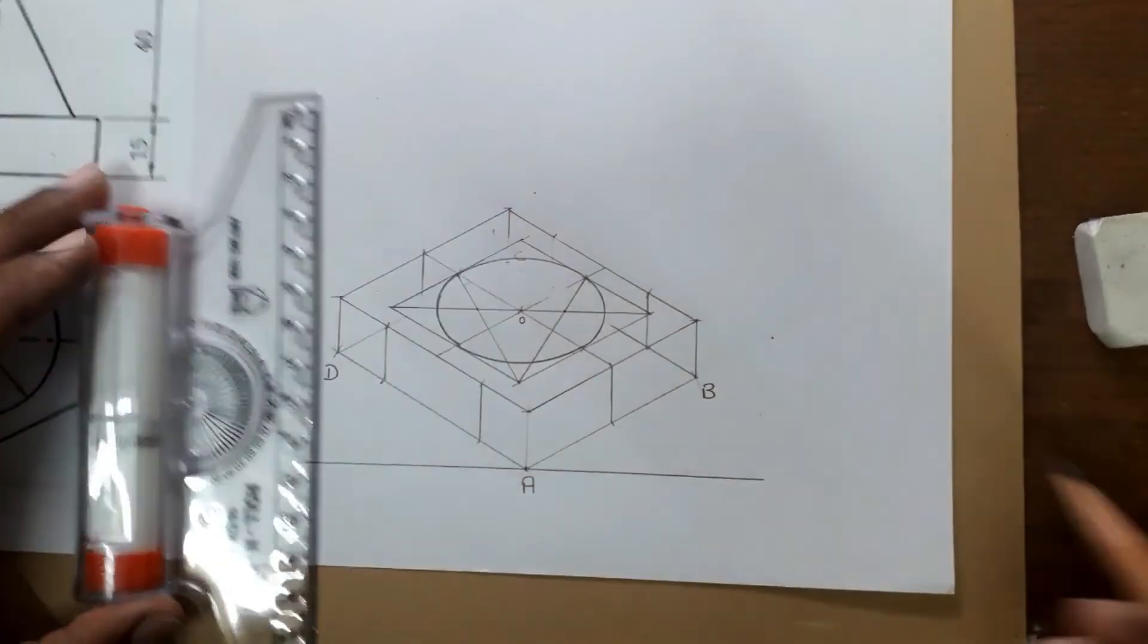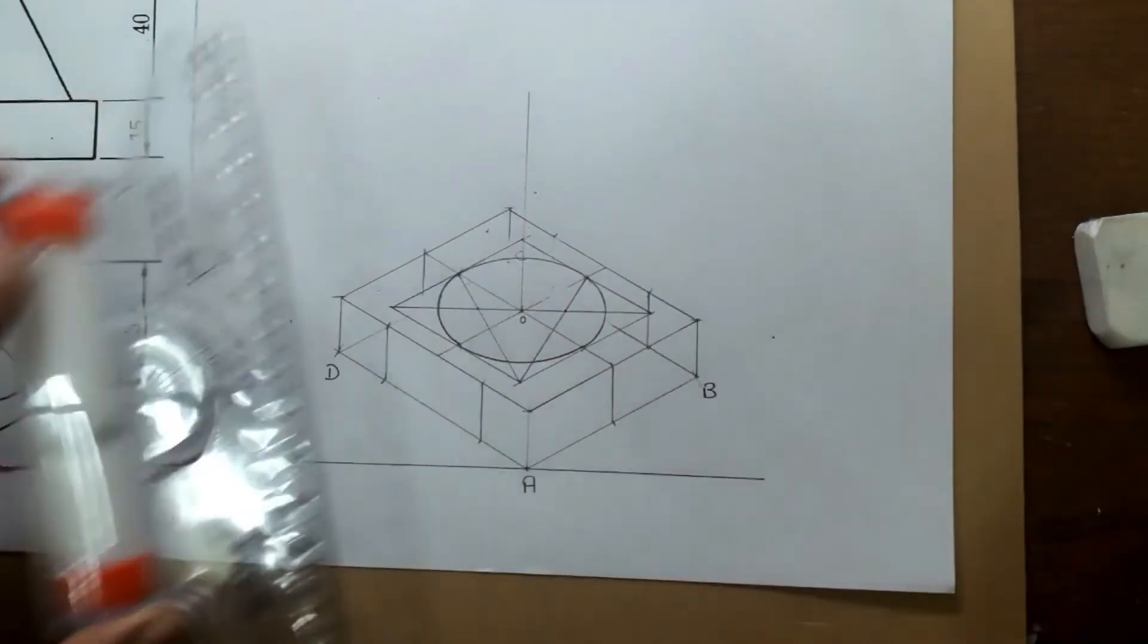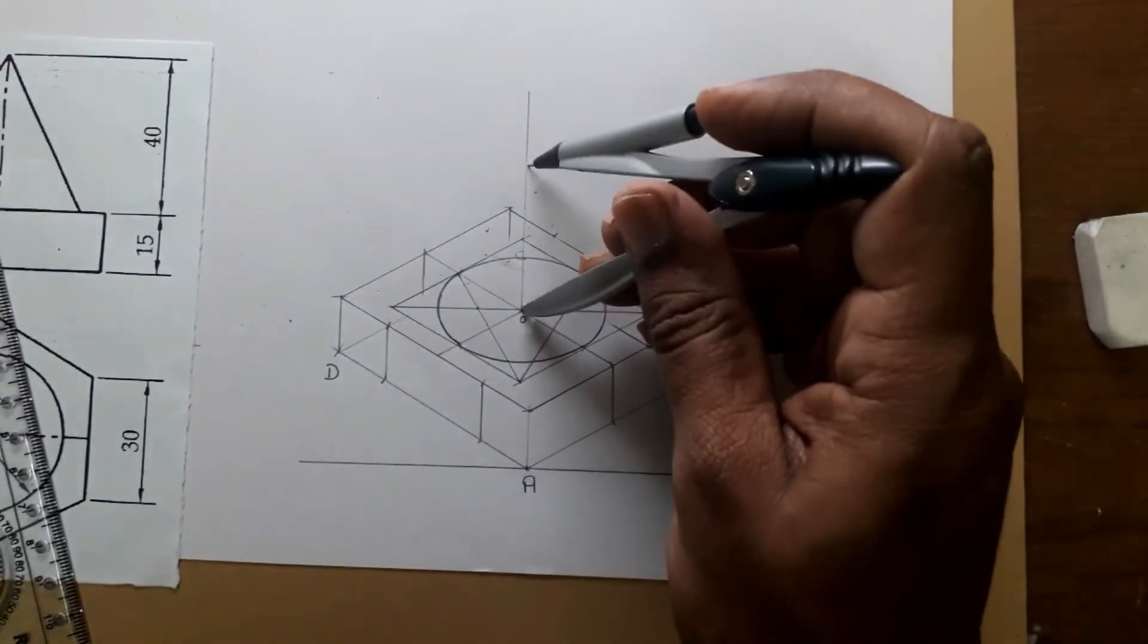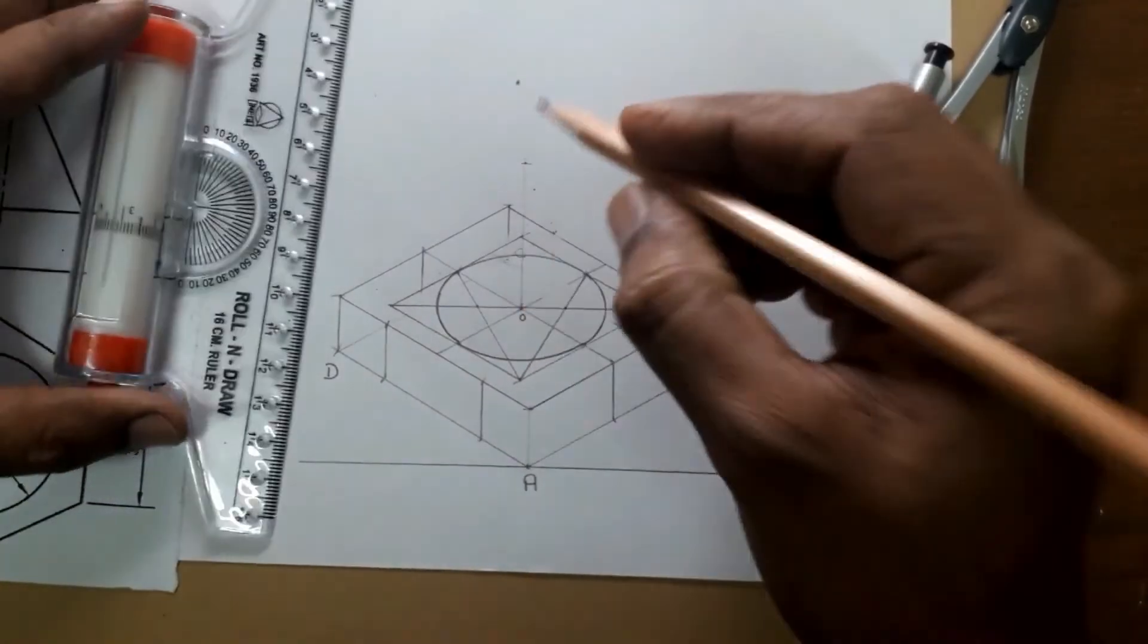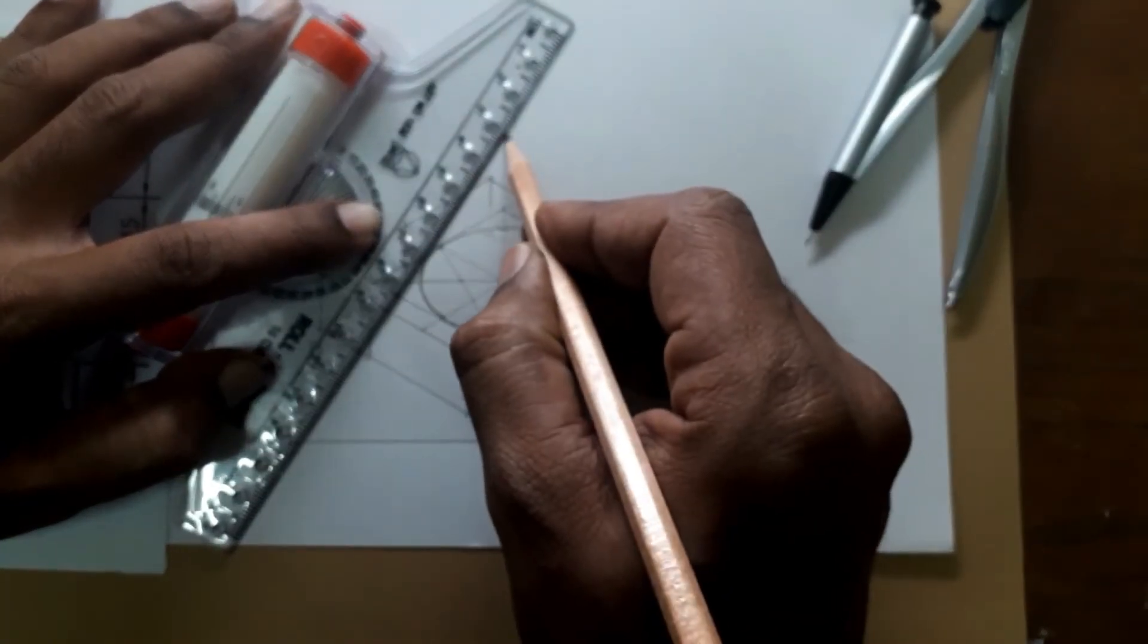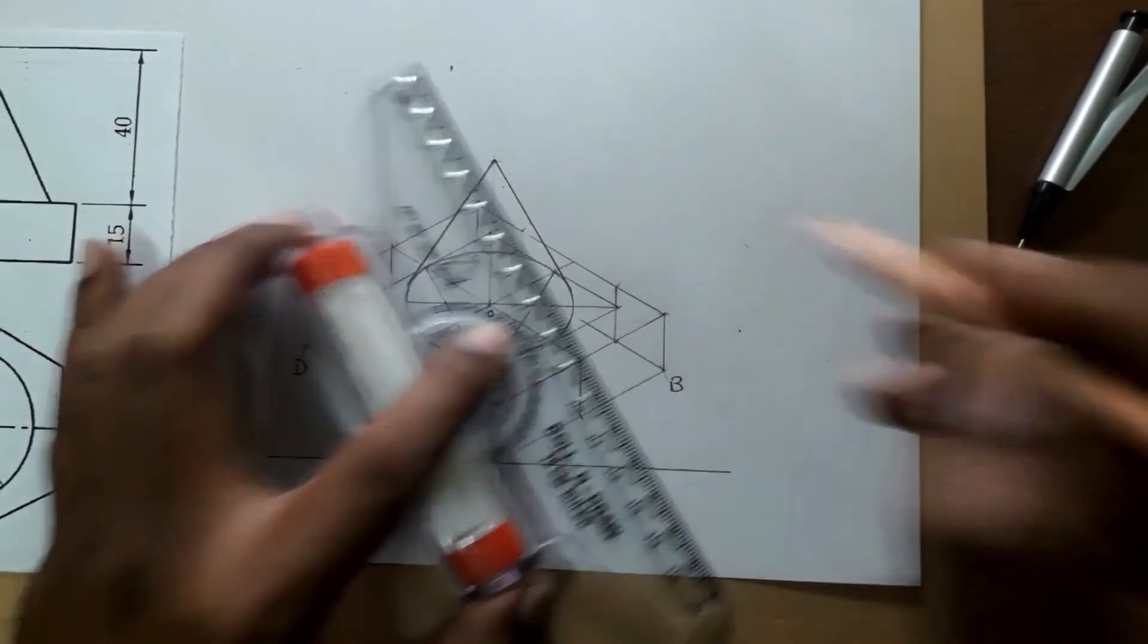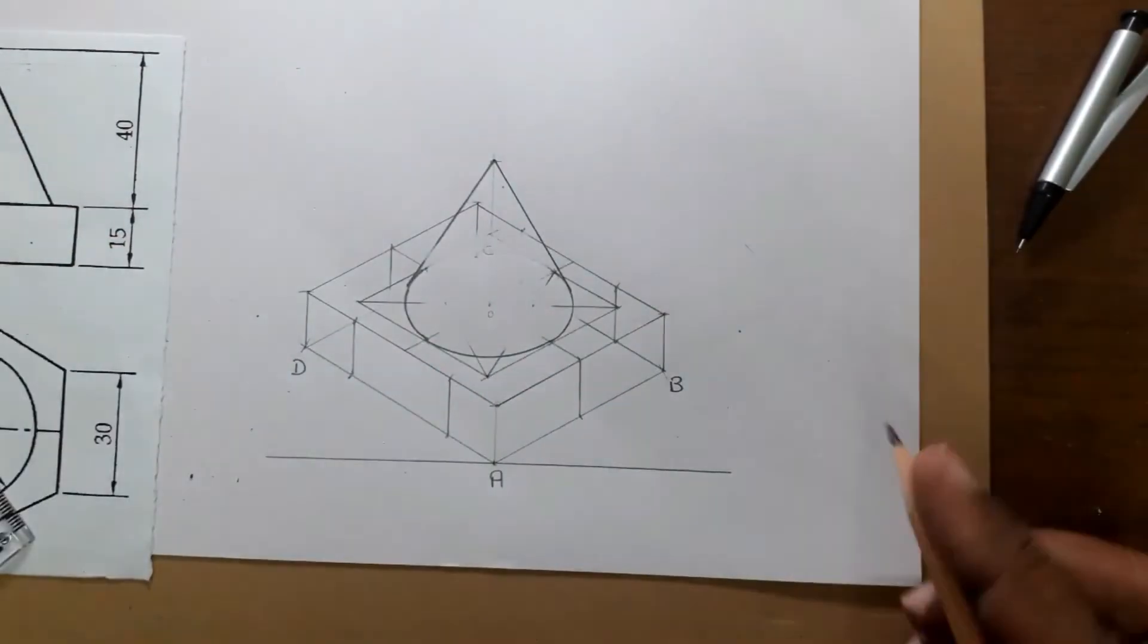The iso-circle is drawn. Now add the height of 40 mm. Draw one vertical reference line from point O. Measure 40 distance with compass. From point O mark distance 40 with impression, then immediately erase. This is the 40 point. From this point, draw lines that just touch the circumference of the iso-circle. Similarly on the other side.